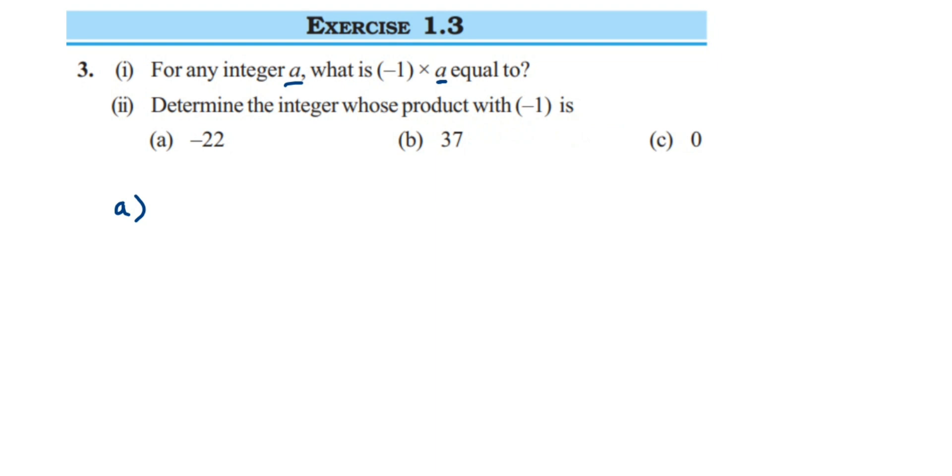It could be any number, any integer. What will be the answer? So if I multiply minus one with any number, suppose a is a number, we're going to get back the same. Whenever we multiply any number with one you get same number, right? So when you multiply a with one, I'll get a as an answer.